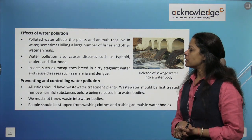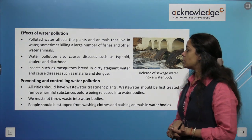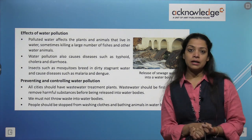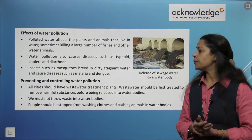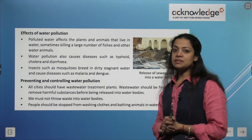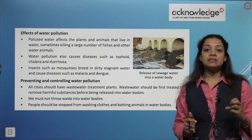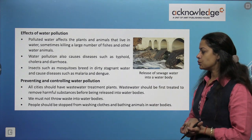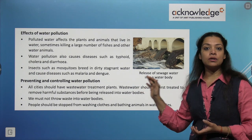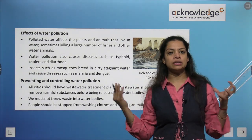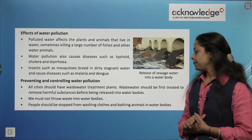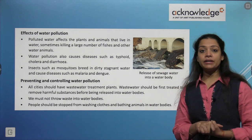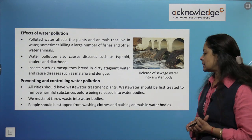Effects of water pollution: polluted water affects plants and animals that live in water, sometimes killing large numbers of fish and other aquatic animals. Water pollution causes diseases such as typhoid, diarrhea and cholera. Insects such as mosquitoes breed in stagnant water and cause diseases like malaria and dengue. To prevent and control water pollution: waste water should be first treated to remove harmful substances before being released into any water system, and we must not throw waste into water bodies.